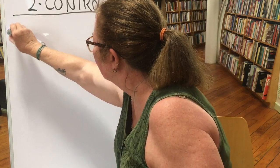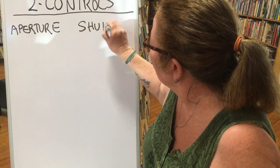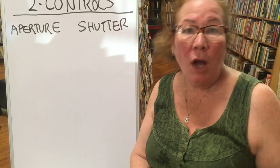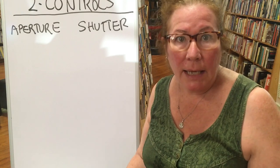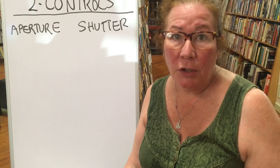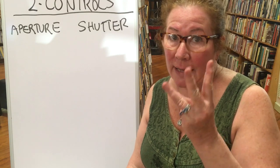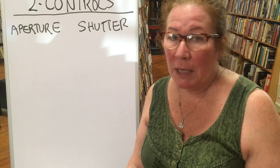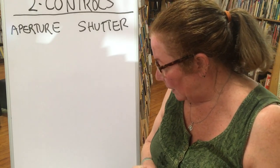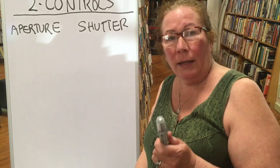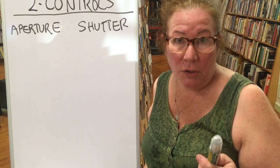Your two main controls that make an exposure are called the aperture and the shutter. We talked about these two controls in the parts of the camera, so you should have seen where they're located. Take some notes on this — these two controls and what I'm going to tell you about them are vital to the first three assignments in this class.